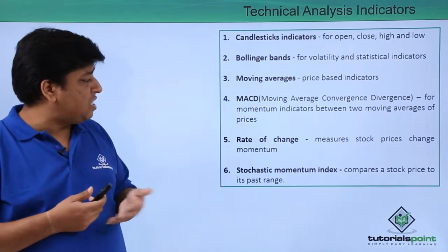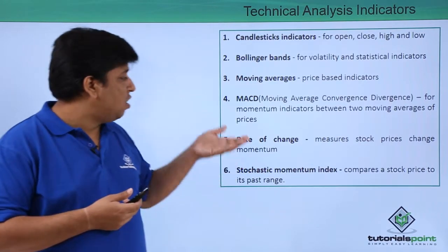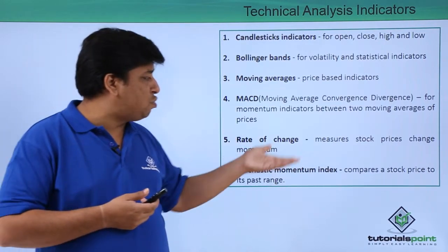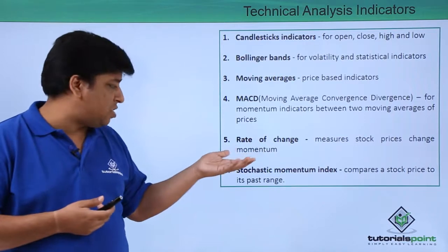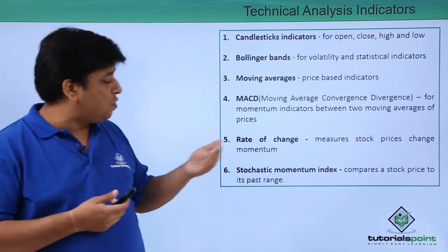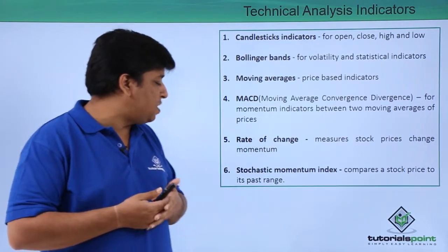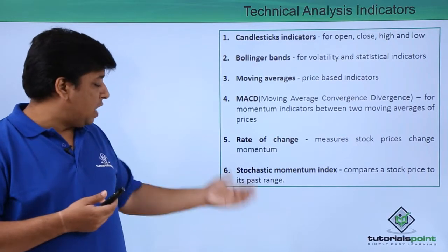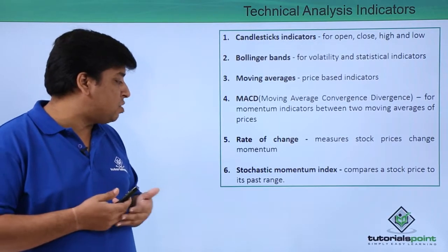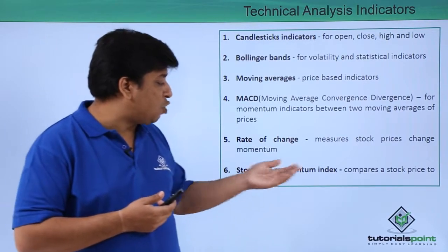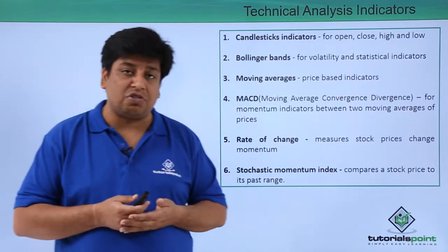MACD, that is Moving Average Convergence and Divergence, is for momentum indicators between two moving averages of the prices. The rate of change is what we are going to see for measures of stock price change momentum. At last we are going to see what is the Stochastic Momentum Index, that compares a stock price to its price range.